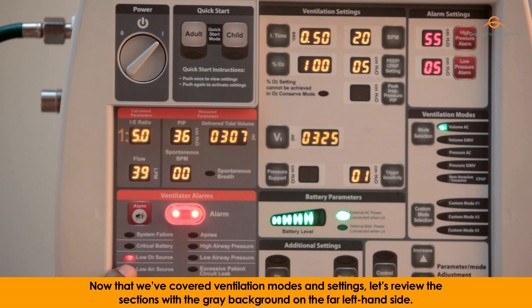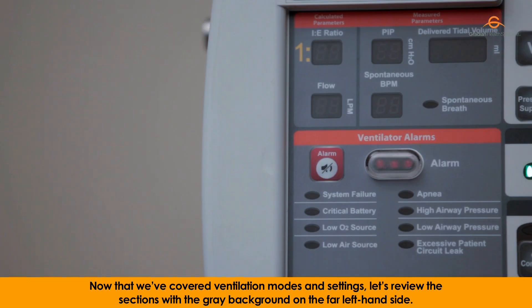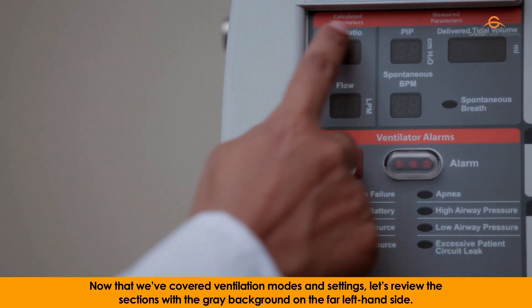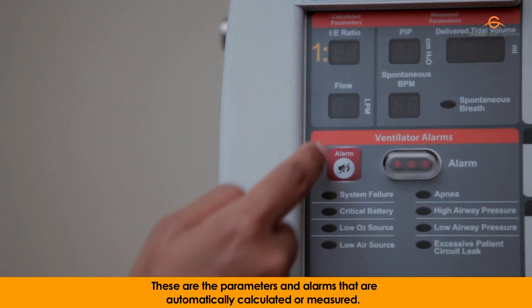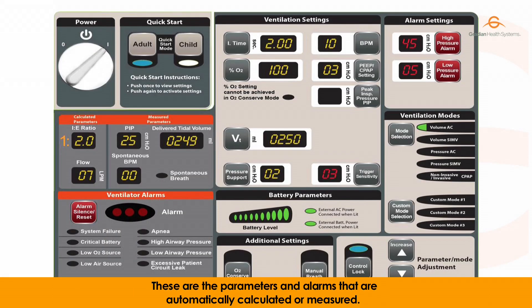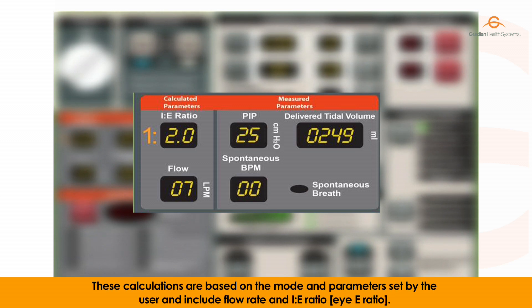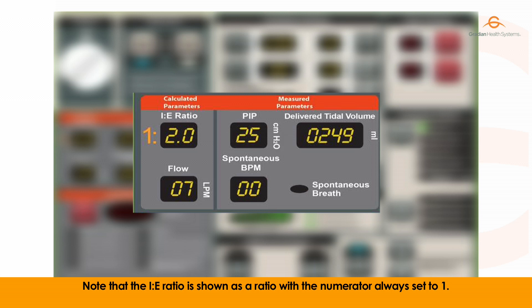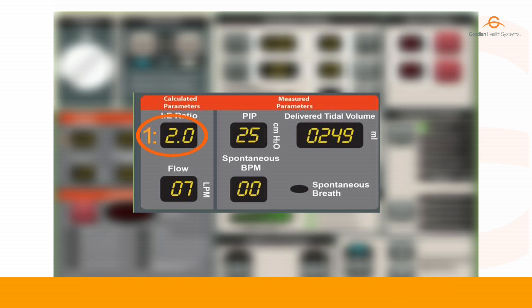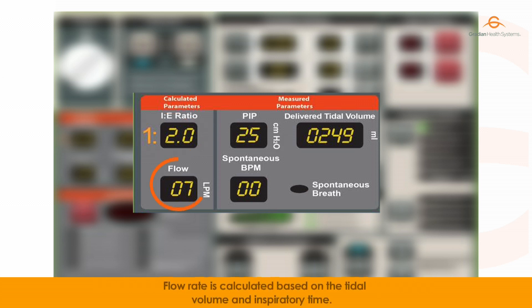Now that we've covered ventilation modes and settings, let's review the sections with the grey background on the far left-hand side. These are the parameters and alarms that are automatically calculated or measured. The first is the calculated parameters panel, which includes flow rate and IE ratio. The IE ratio is shown with the numerator always set to 1, calculated based on inspiratory time and breaths per minute. Flow rate is calculated based on the tidal volume and inspiratory time.